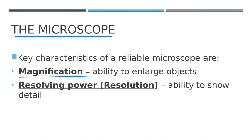The second characteristic is resolution, or resolving power — the ability to show detail. A better microscope gives a clearer, more focused image of the object. A cheaper microscope gives very low detail, like a mostly blurry object.